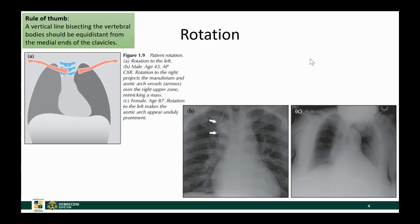Rotation is important because if the patient is rotated to either side, the normal anatomy you are accustomed to may appear completely different. To check for rotation, draw an imaginary vertical line through the spinous processes and measure the distance from that line to the clavicular head on each side. If the distance is larger on one side, the patient was rotated toward that side when the image was taken.